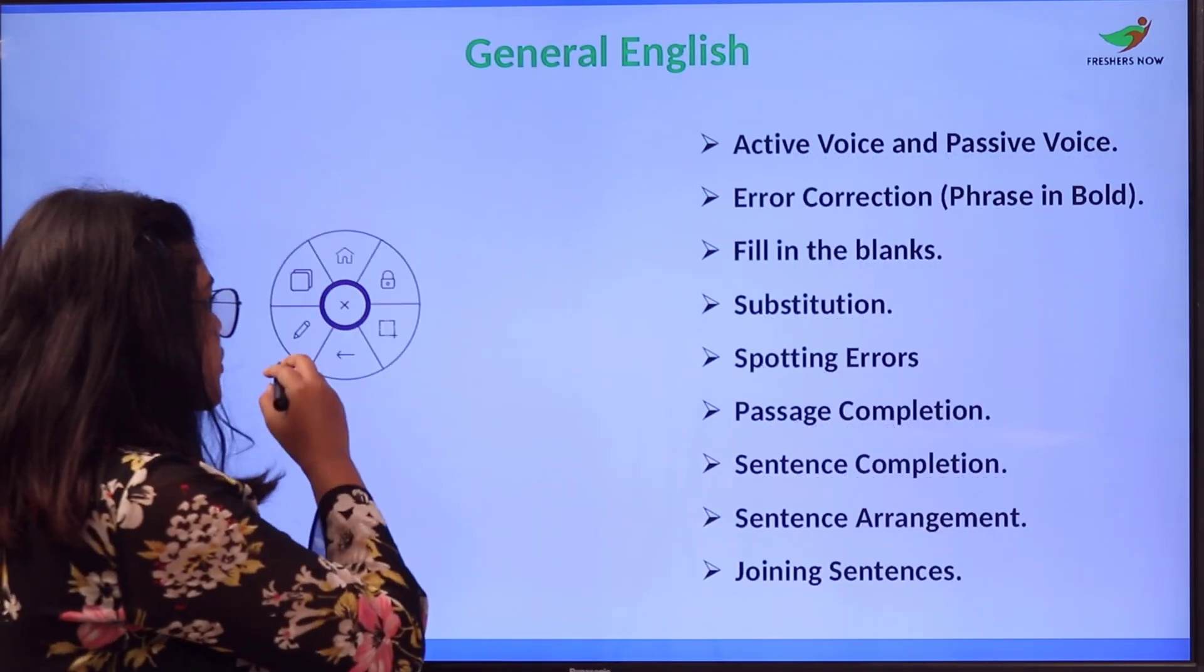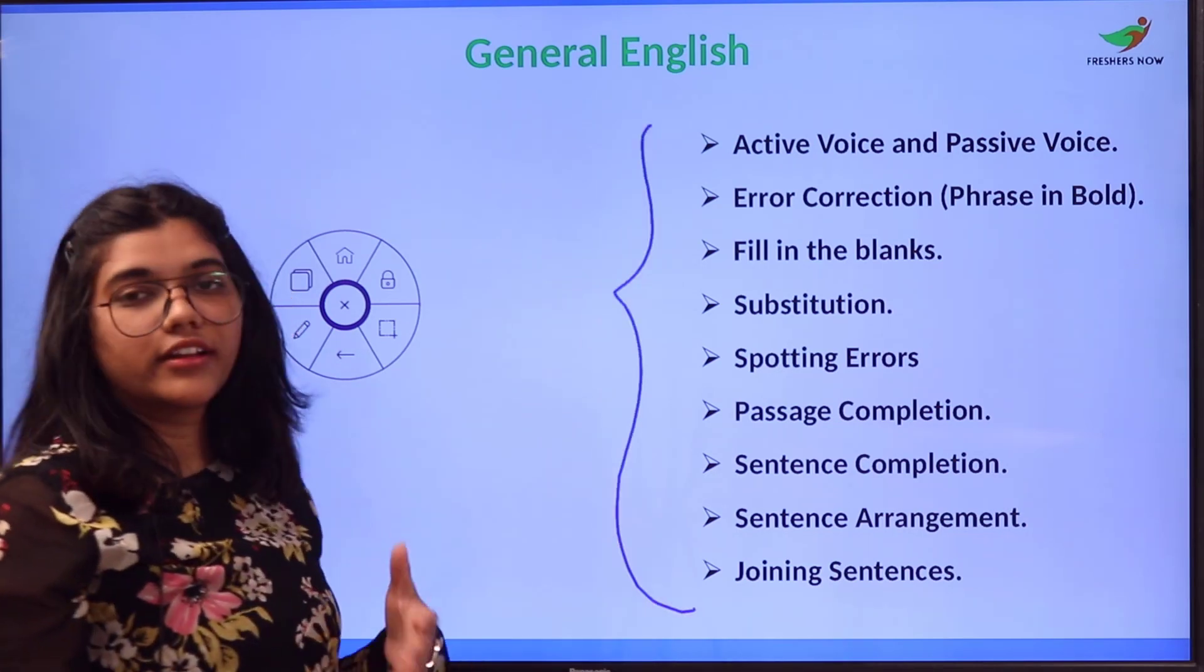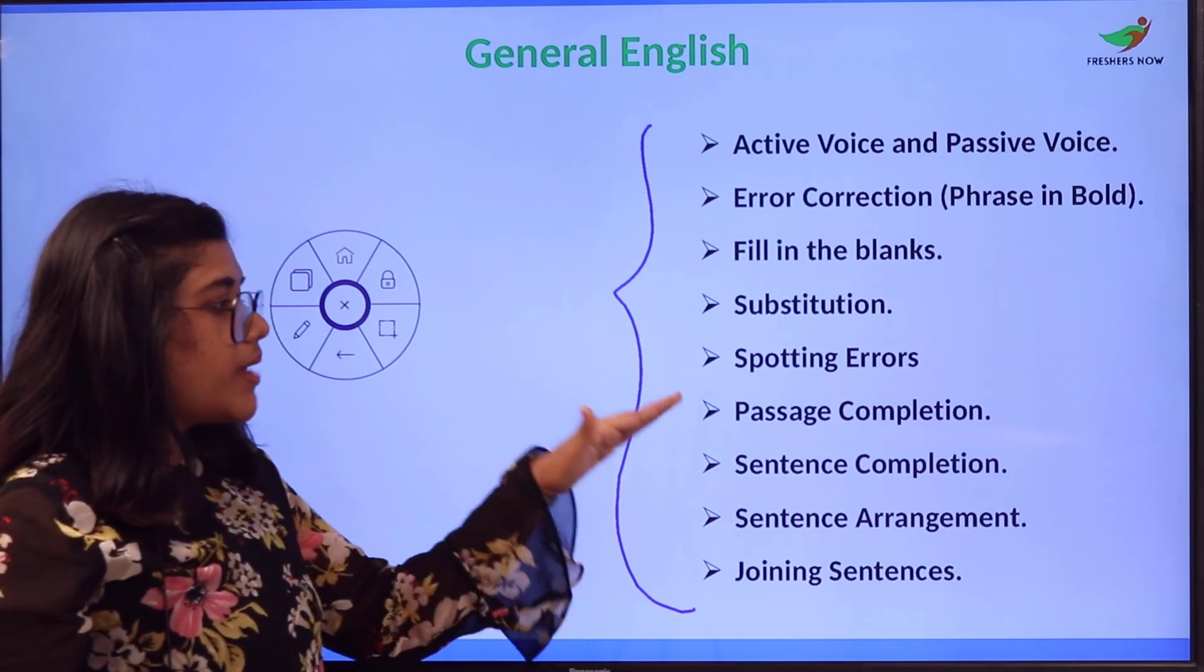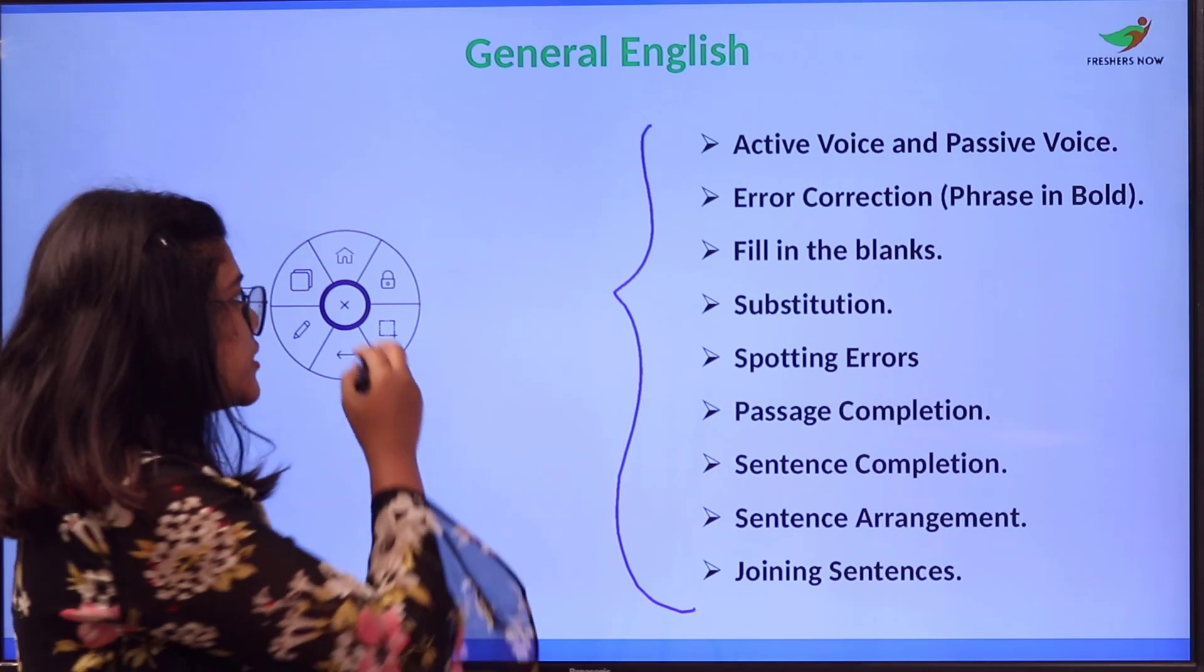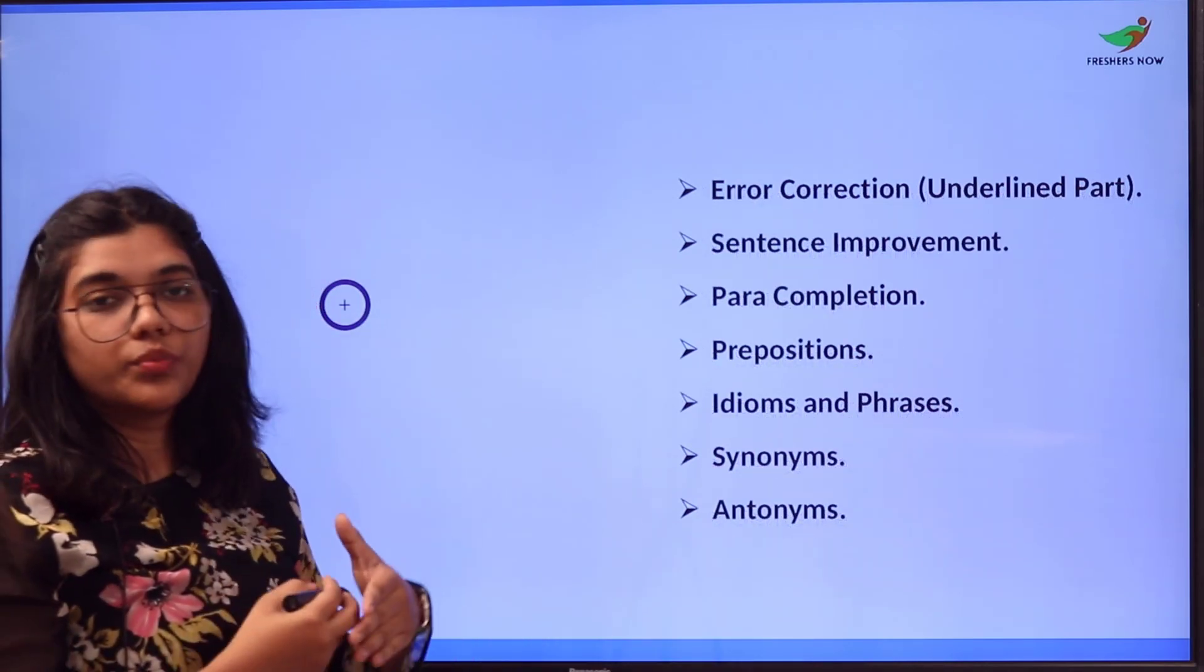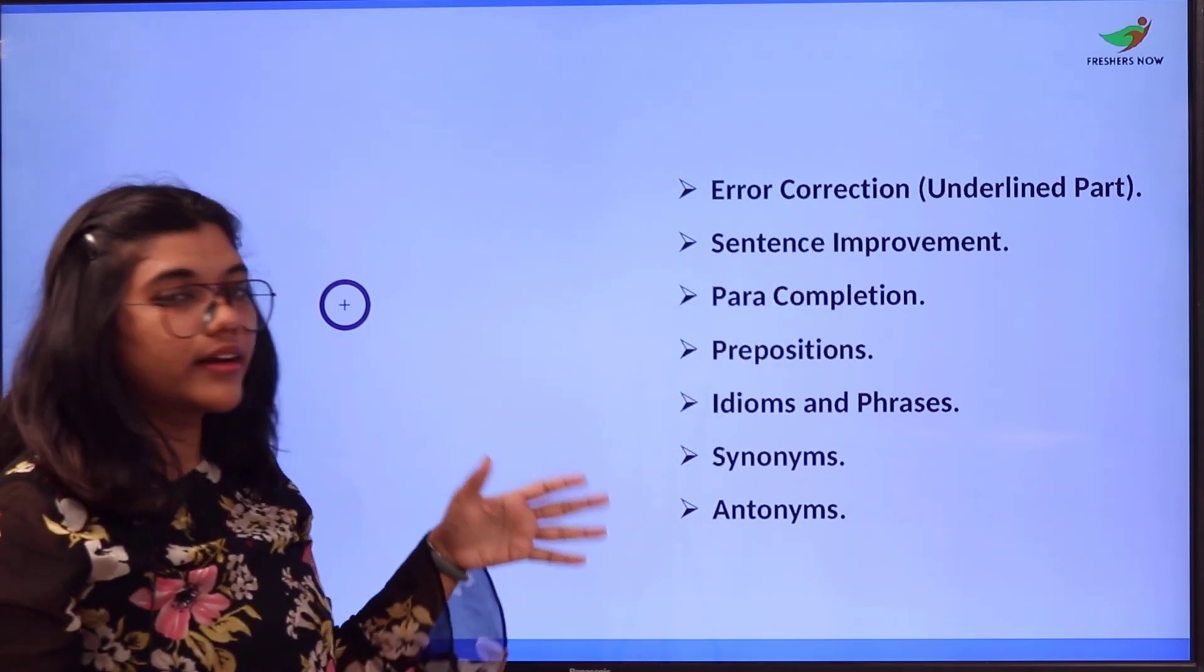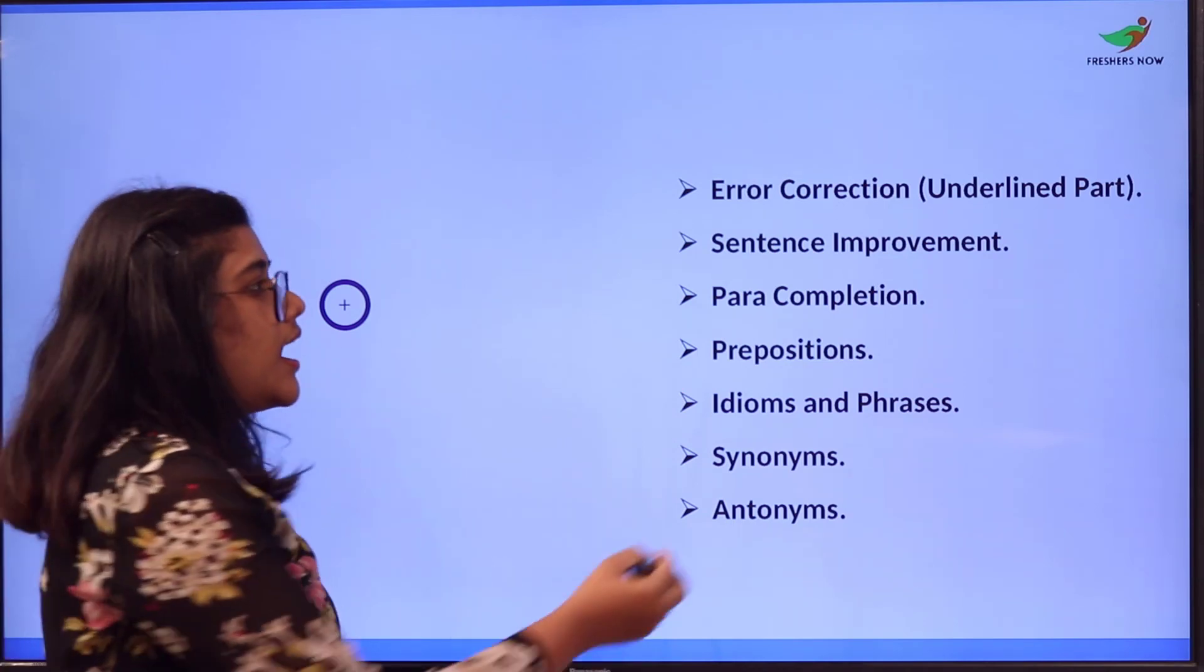Next we have general English section. For general English: active voice and passive voice, error corrections, fill in the blanks, substitutions, spotting errors, passage completion, sentence completion, sentence arrangement, joining sentences, error correction in underlined part, sentence improvement, paragraph completion, prepositions, idioms and phrases, and synonyms and antonyms.